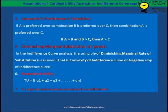Dependent Utility: TU equals Q1 plus Q2 plus Q3 up to QN. This means that total utility depends on units consumed. A large bundle of goods is preferred to a small bundle — this means that the consumer has monotonic preference, meaning more is better.